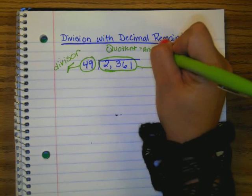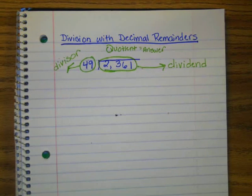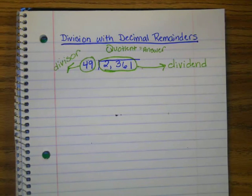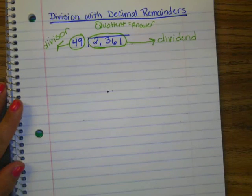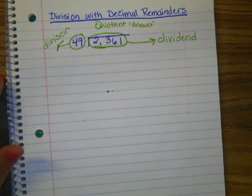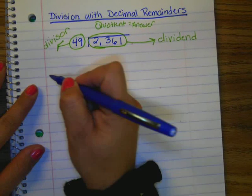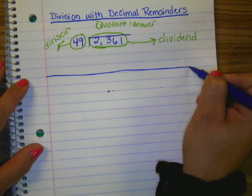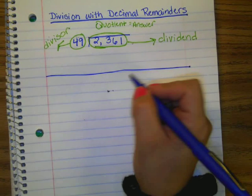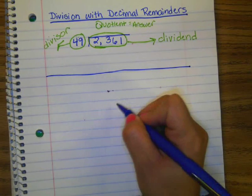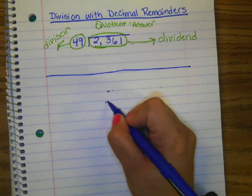Okay, so last year in 5th grade, we actually divided and we learned how to do decimal remainders. In 6th grade, you're expected to know how to do that. So 5th grade, it was just kind of something we introduced. 6th grade, you gotta do it. So I'm going to draw a line to separate. So I'm rewriting my problem and I'm leaving a little bit of space here. So 2,361 divided by 49.